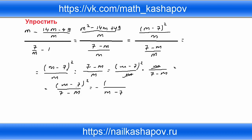Квадрат обозначает умножить на себя два раза: (m минус 7)(m минус 7). При этом я могу сократить, и у нас остаётся минус(m минус 7), или же, чтобы было красиво, меняем местами — 7 минус m. Это и есть ответ: 7 минус m. Если понравилось видео, ставьте лайк, нажмите на колокольчик, чтобы не пропустить новые видео. До новых встреч!